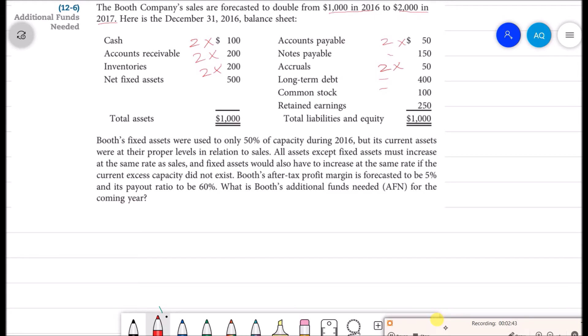We have to calculate retained earnings because we will be paying out 60% of our income to our shareholders and retaining 40% of our income. So we have to calculate what is this 40% out of our sales.